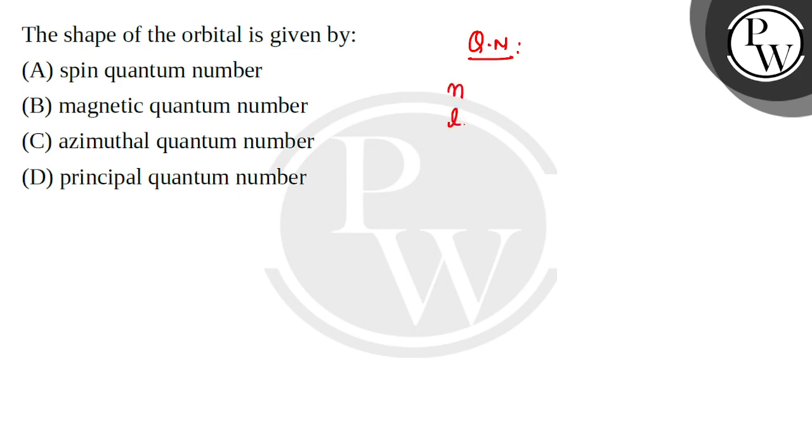N, L, ML and MS. So N represents the energy of the electron. Electrons will remain within the orbit, in a certain position. So we can say the energy of the orbit, or the size of the orbit.